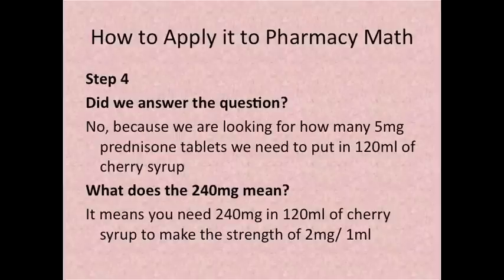Step 4. Did we answer the question? No because we are looking for how many 5 milligram prednisone tablets we need to put in 120 ml of cherry syrup. What does the 240 milligram mean? It means you need 240 milligrams of prednisone in 120 ml of cherry syrup to make the strength of 2 milligrams per 1 ml. So if you had to weigh it, let's say you had to weigh prednisone out, you would weigh 240 milligrams and then put that in 120 ml of cherry syrup.